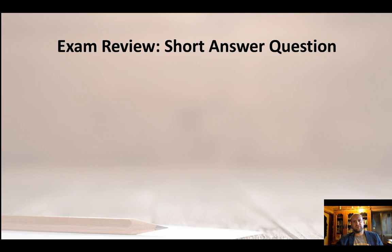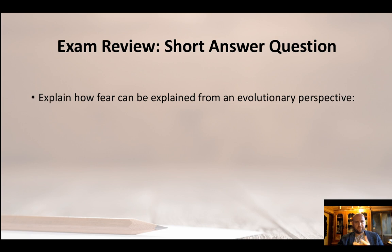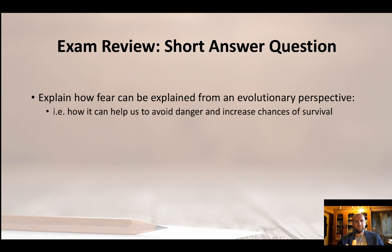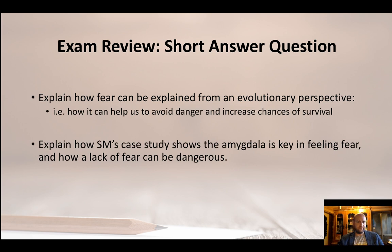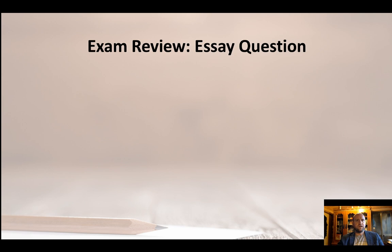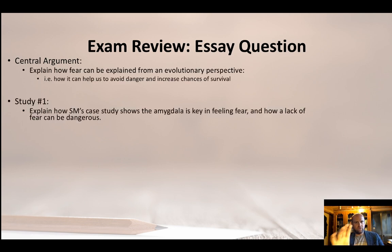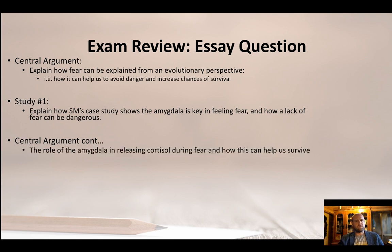For a short answer exam question — something like 'outline one evolutionary explanation of behavior' — your central argument would be to explain how fear can be explained from an evolutionary perspective: how it helps us avoid danger and increase chances of survival. Use SM's case study showing the amygdala is key in feeling fear, and highlight the detail about the dangerous situations she's been in and her lack of appropriate fear response. In about 300 to 400 words, that would get you top marks. For an essay, targeting 900 to 1000 words, keep that same central argument as your opening, then develop further by introducing the amygdala and the role of cortisol.